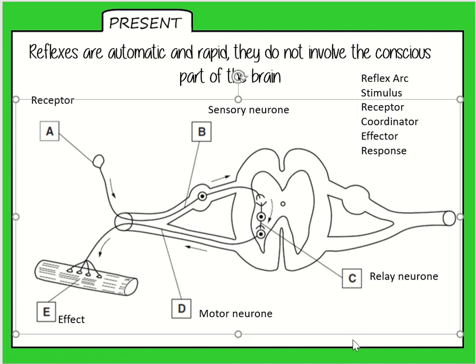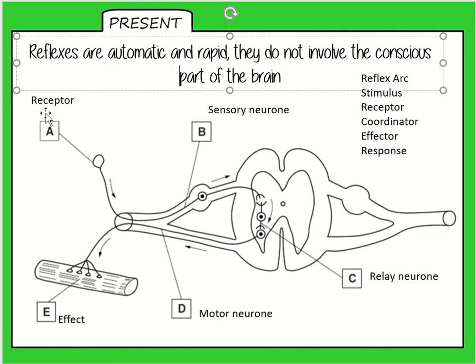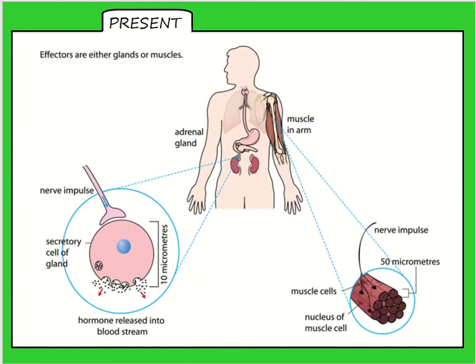You'll often be given a diagram like this one where you have to label the parts of it. It's going to seem very confusing at first but it will suddenly become second nature. The final thing I'm going to talk about is effectors. Effectors are either muscles or endocrine glands. We're going to move on to the endocrine system afterwards. Glands release hormones - endocrine glands release hormones. Muscles, as you know, are responsible for contracting and relaxing.